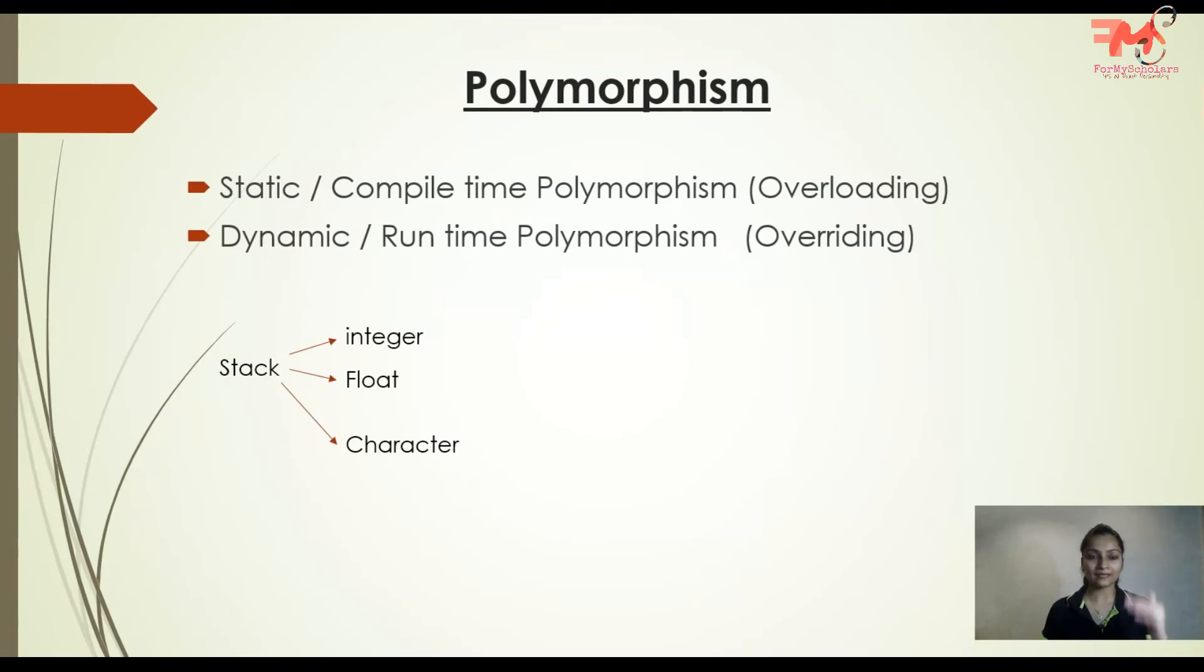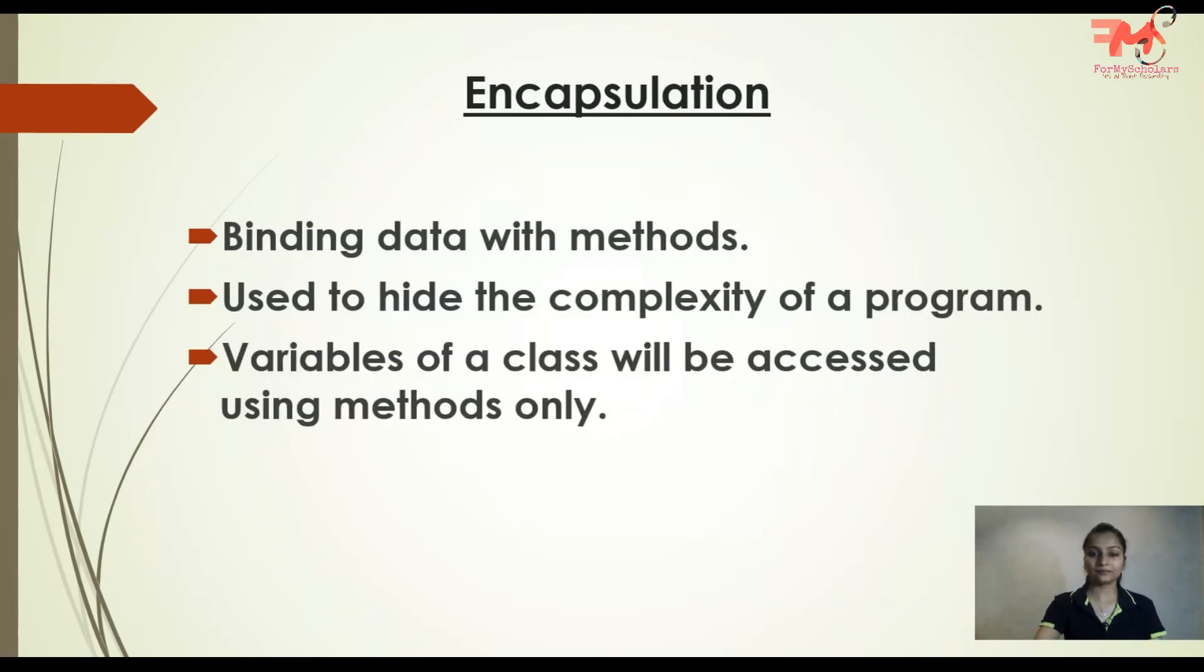In overriding case, we have a class that has another class inheriting it. So in that child class, you can use the function of the parent class with the same name, with the same number of parameters, and the implementation may be different. So this property is known as polymorphism. Next one is encapsulation.